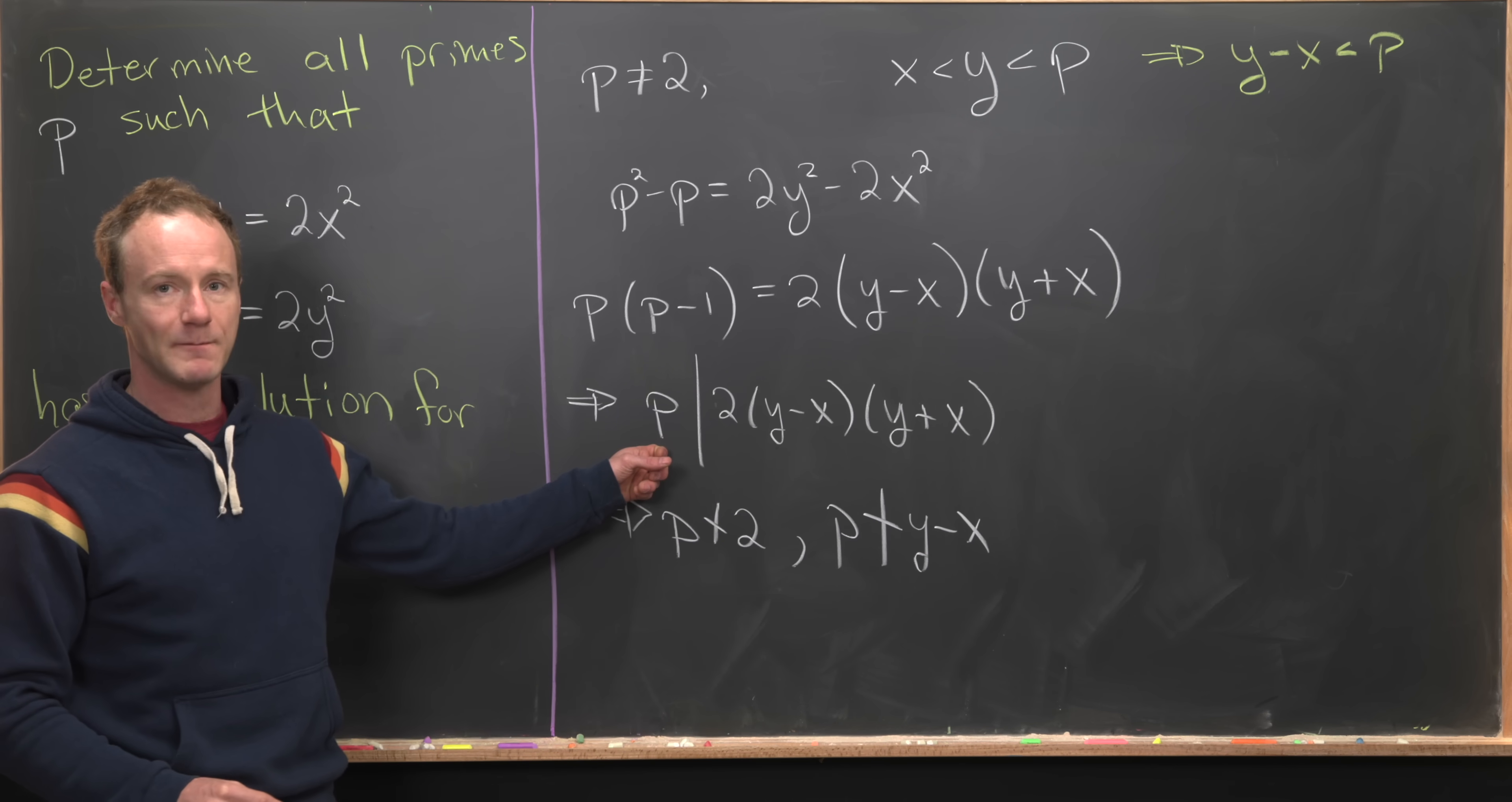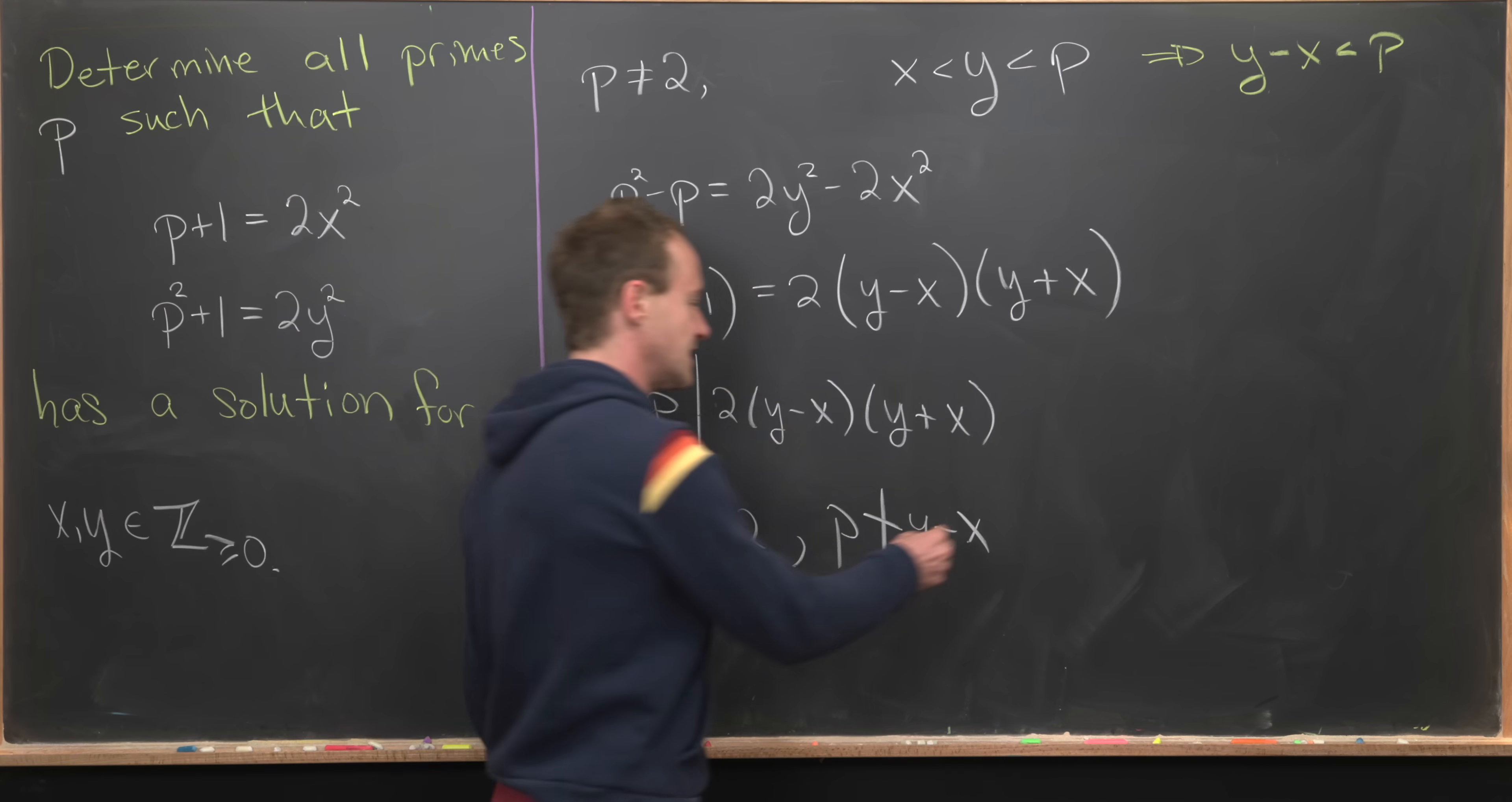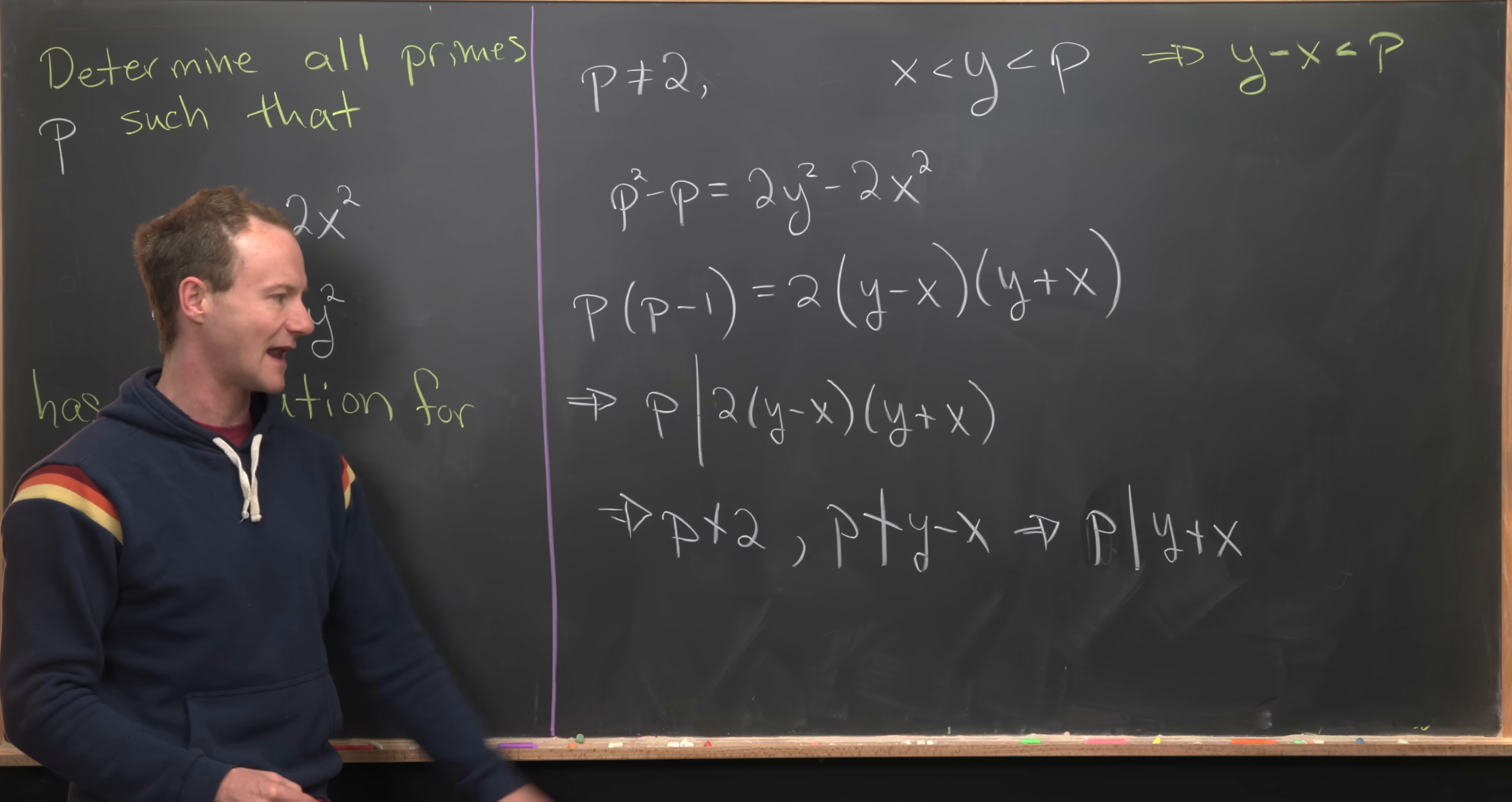So what do we have? We have a number that is prime. It divides the product of 2, y−x, and y+x. It doesn't divide 2, it doesn't divide y−x, so it must divide y+x. But can we narrow down the value of p from that?